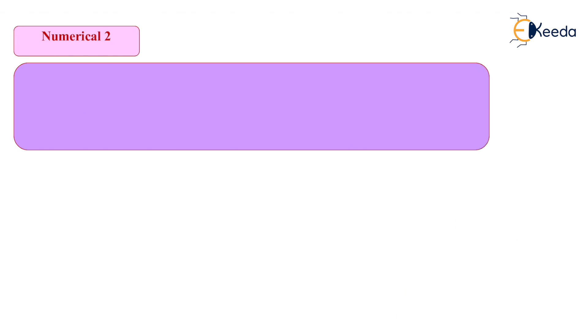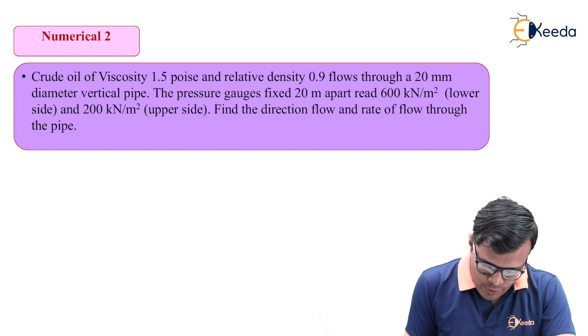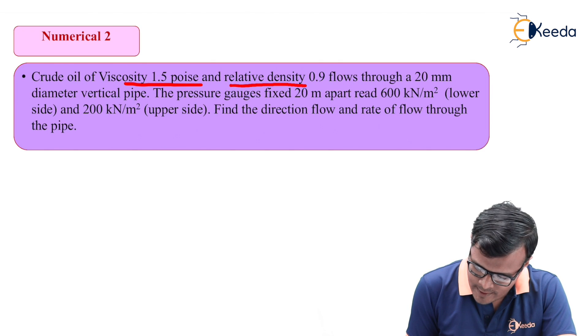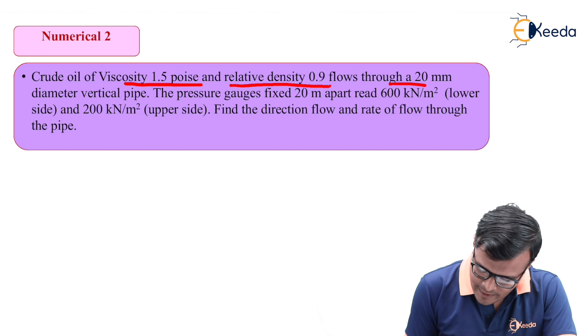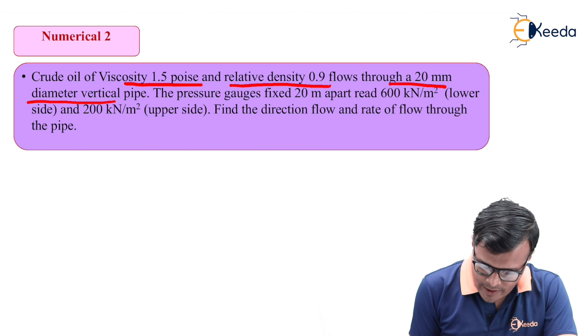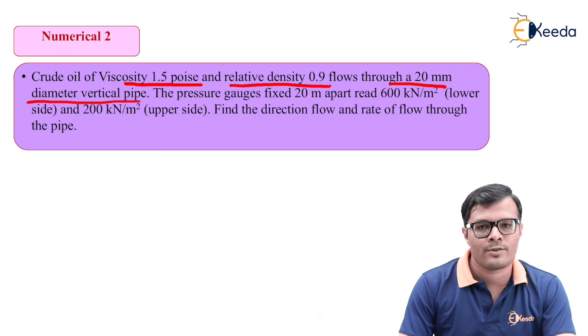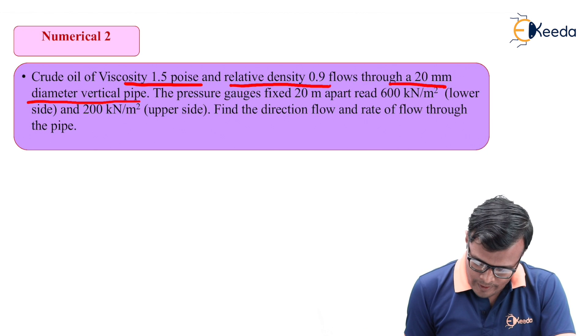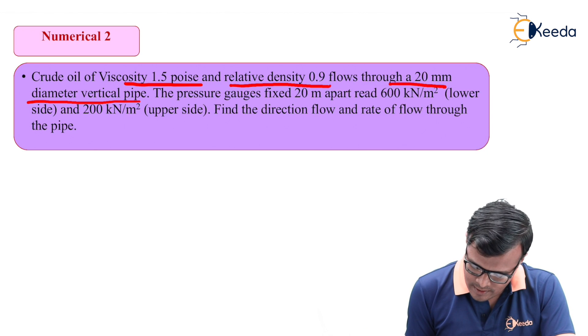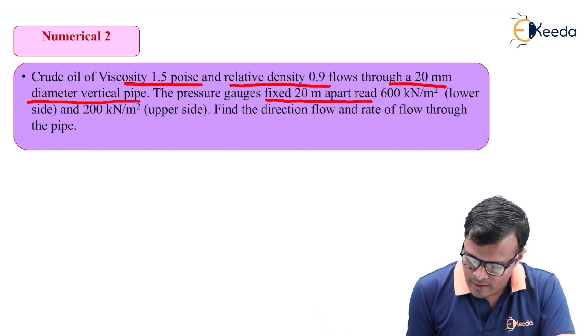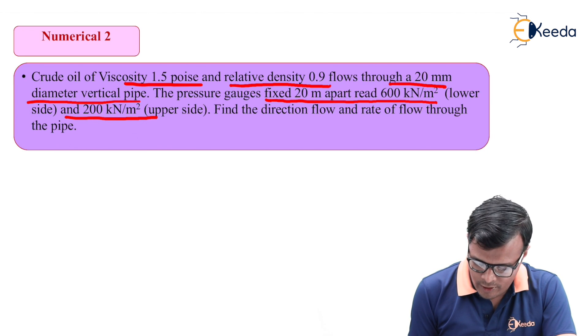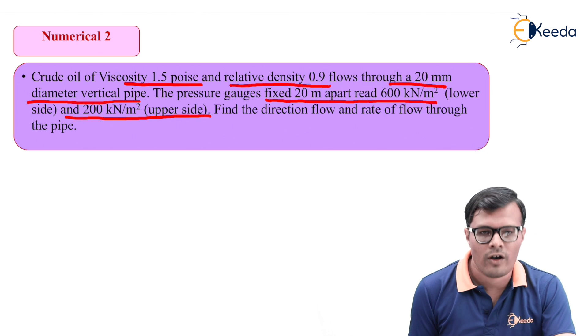Let's see the numerical. Crude oil of viscosity 1.5 poise and relative density 0.9 flows through a 20 mm diameter vertical pipe. In this numerical the position of pipe is vertical, meaning the datum is continuously changing with respect to height. The pressure gauges fixed 20 meters apart read 600 kN per meter square on the lower side and 200 kN per meter square on the upper side.